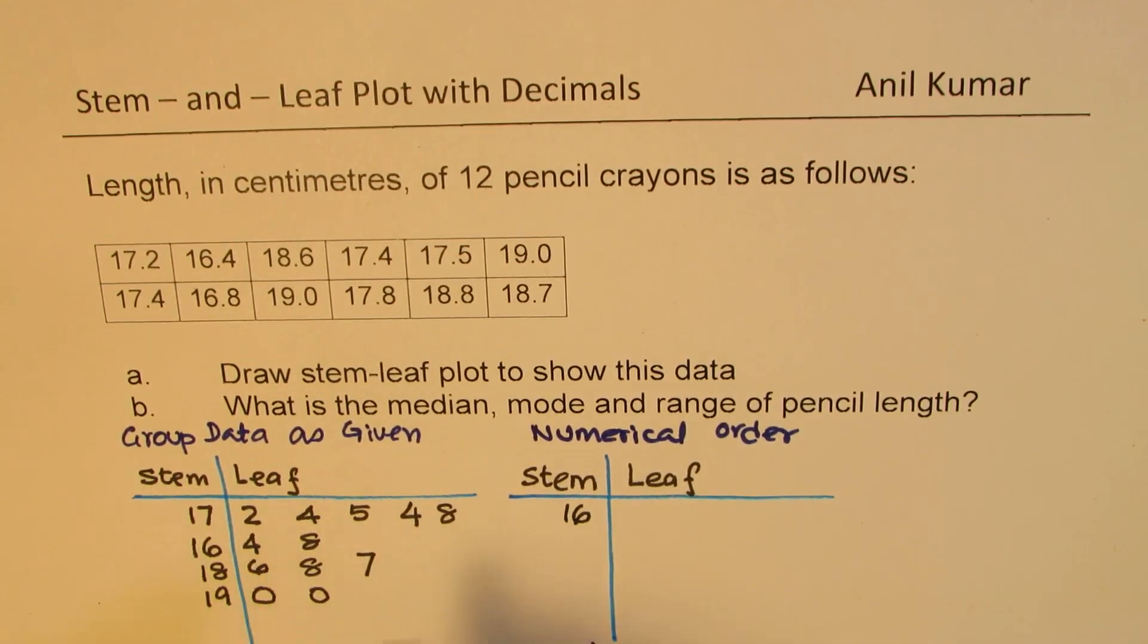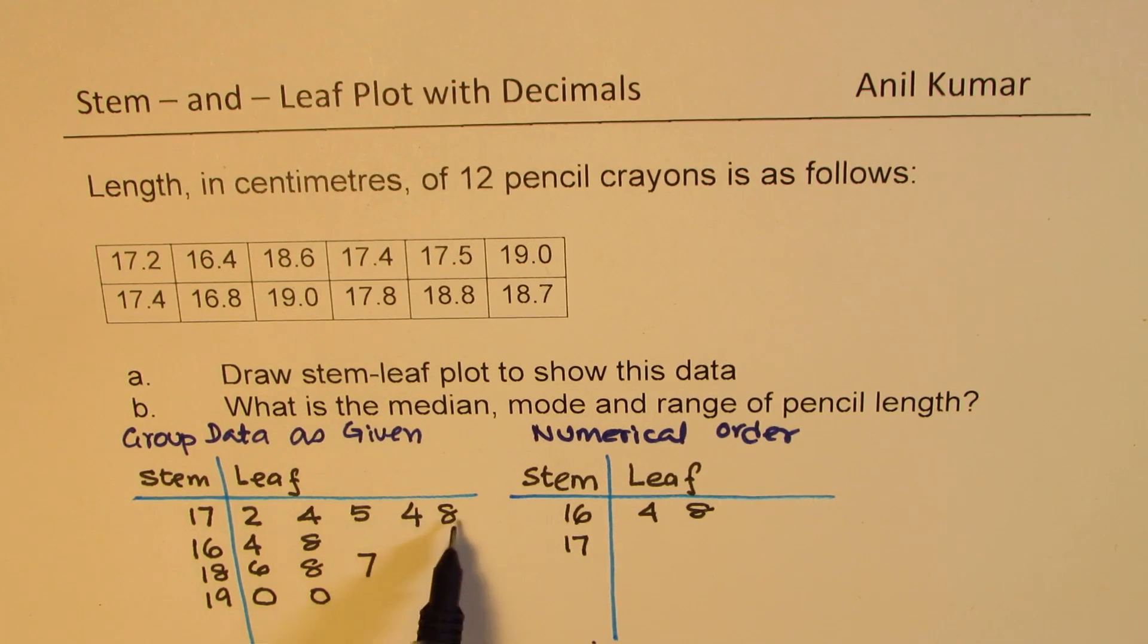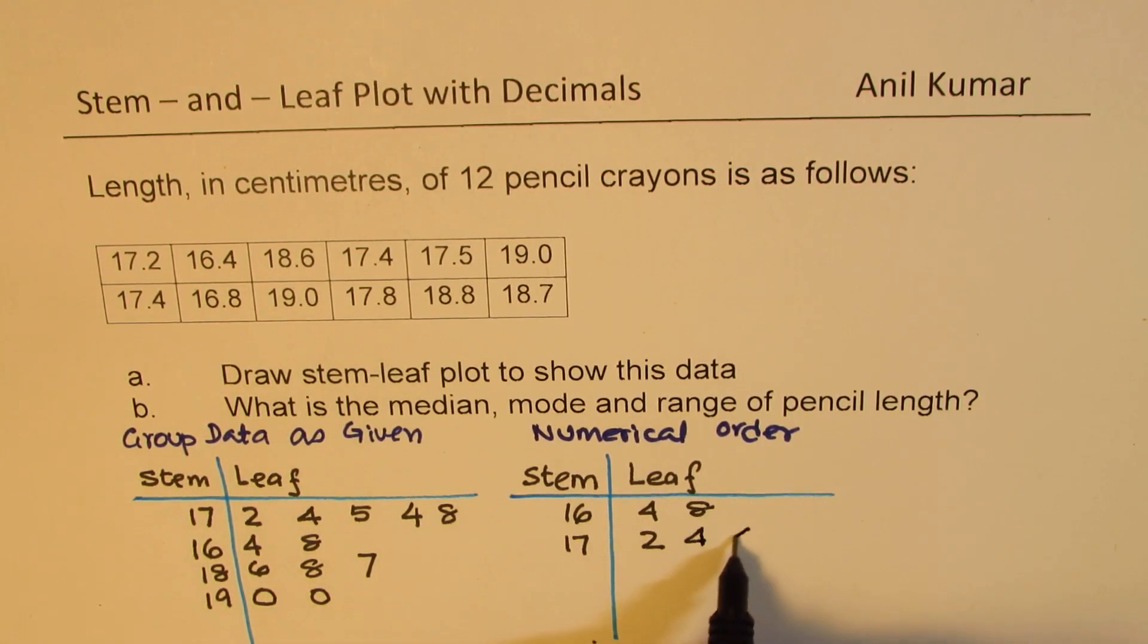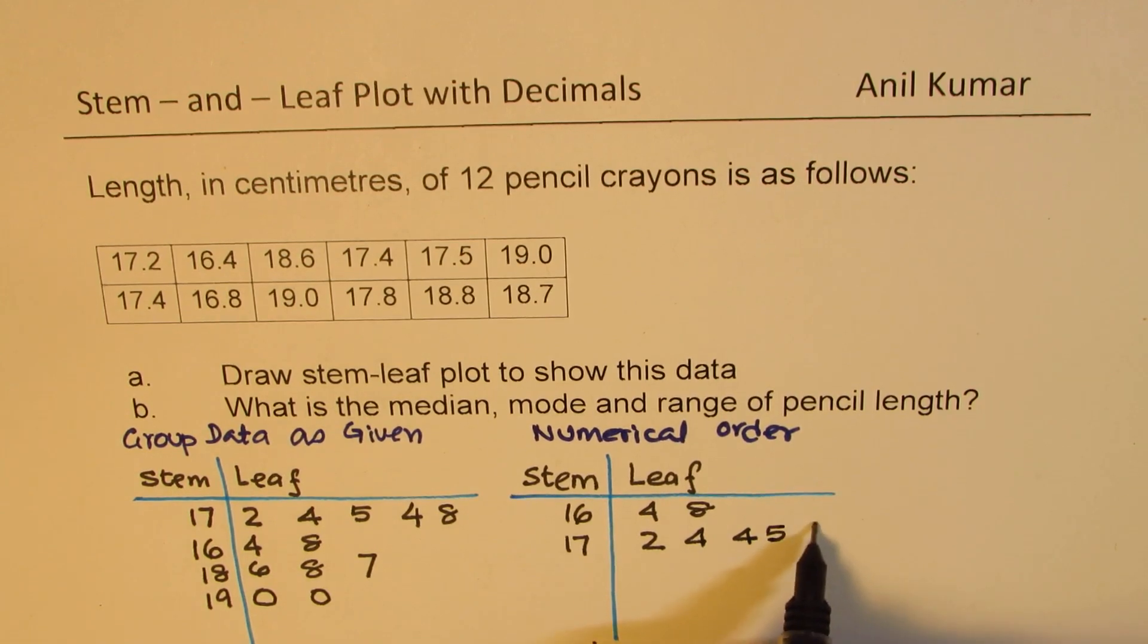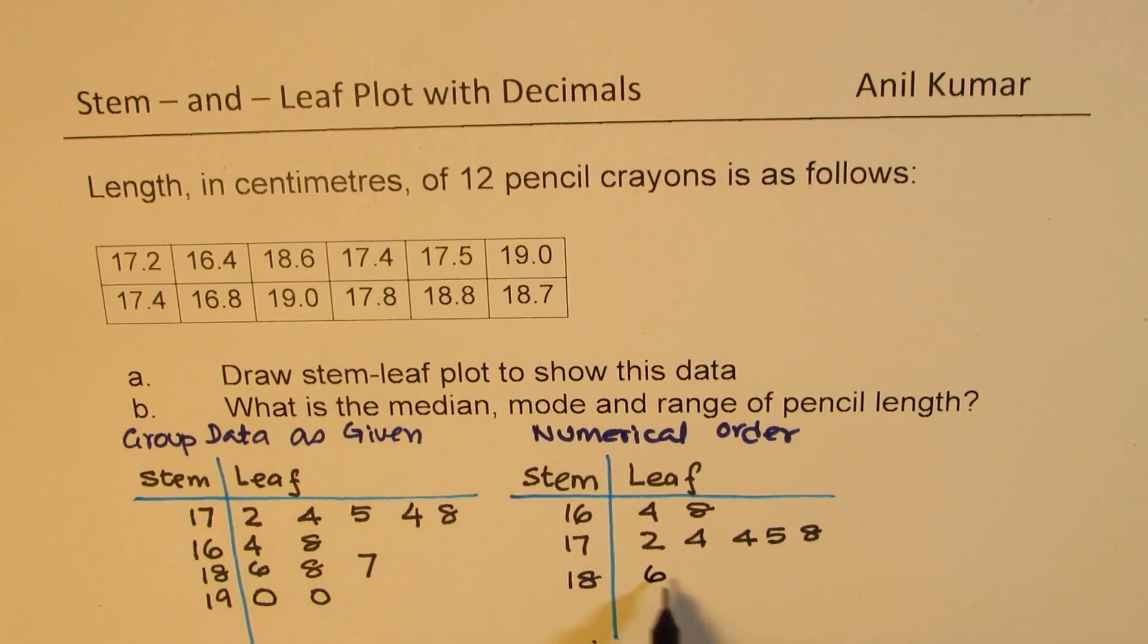In 16 we have two elements, 4 and 8, so we'll put those 4 and 8 in order. Now comes 17. In 17 we have 2, 4, 5, 4, 8. In numerical order will be 2, 4, 4, 5 and then 8. Then it's 18, so for 18: 6, 7 and 8.